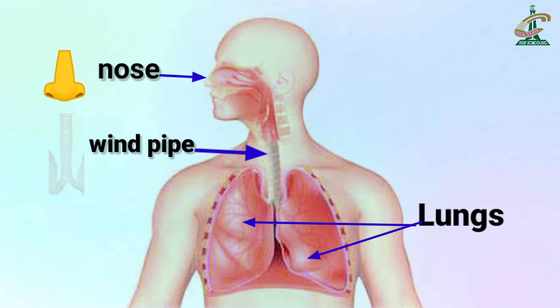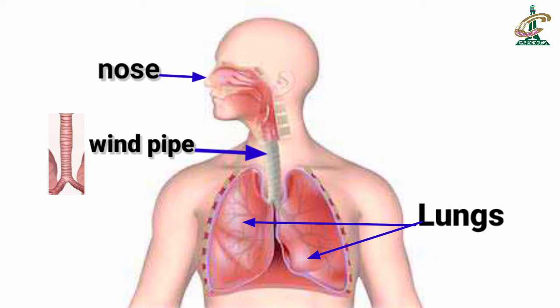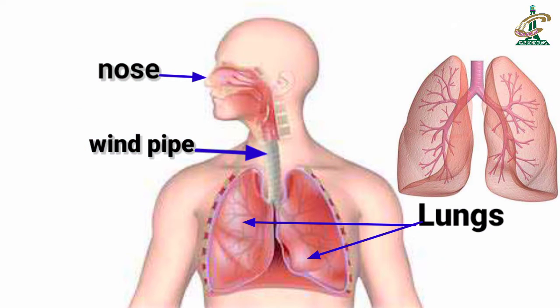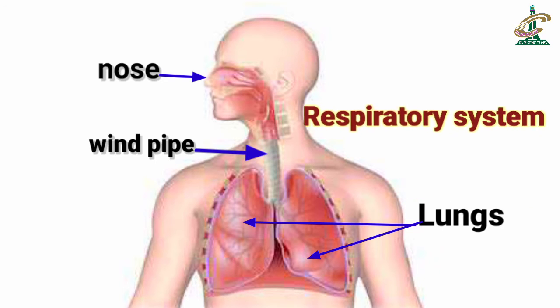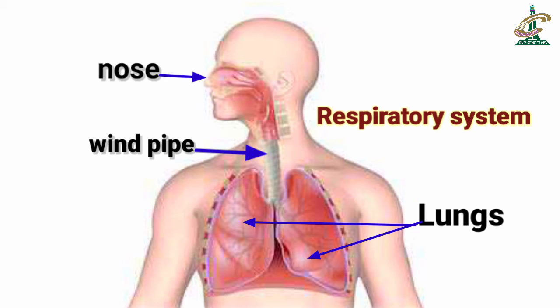The nose, a pipe-like structure which is the windpipe, and bag-like structures are called lungs. These three together make up our respiratory system.